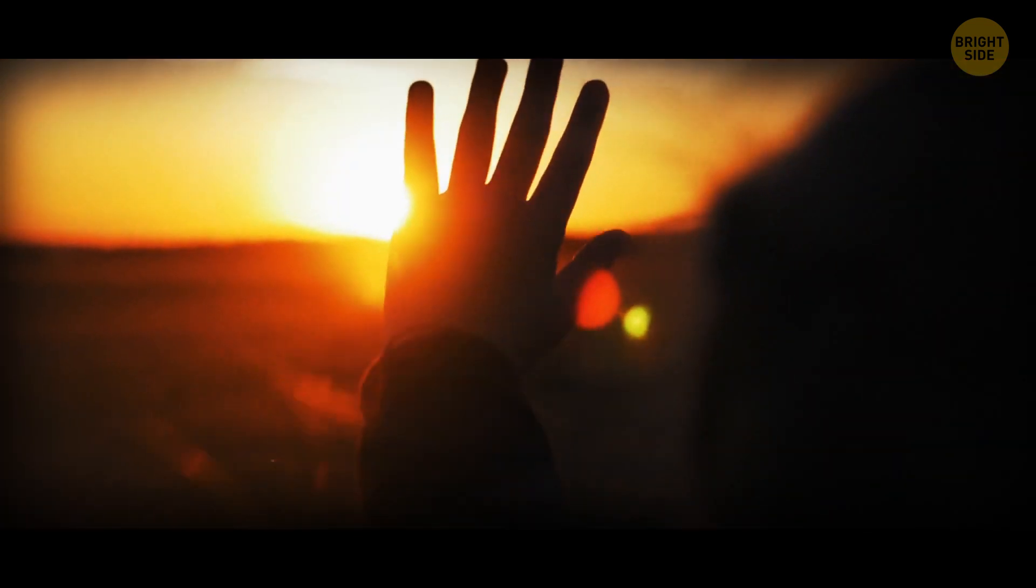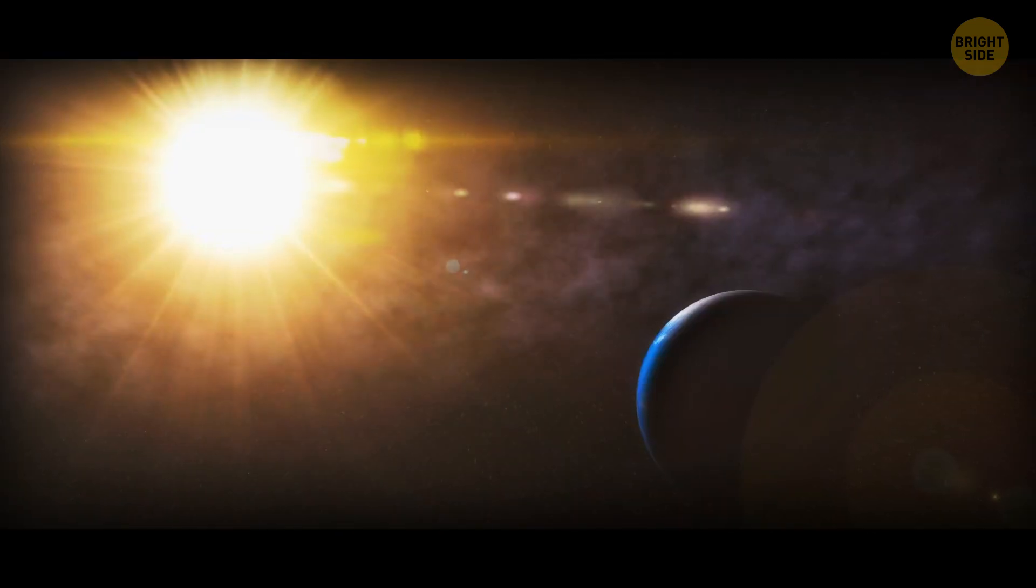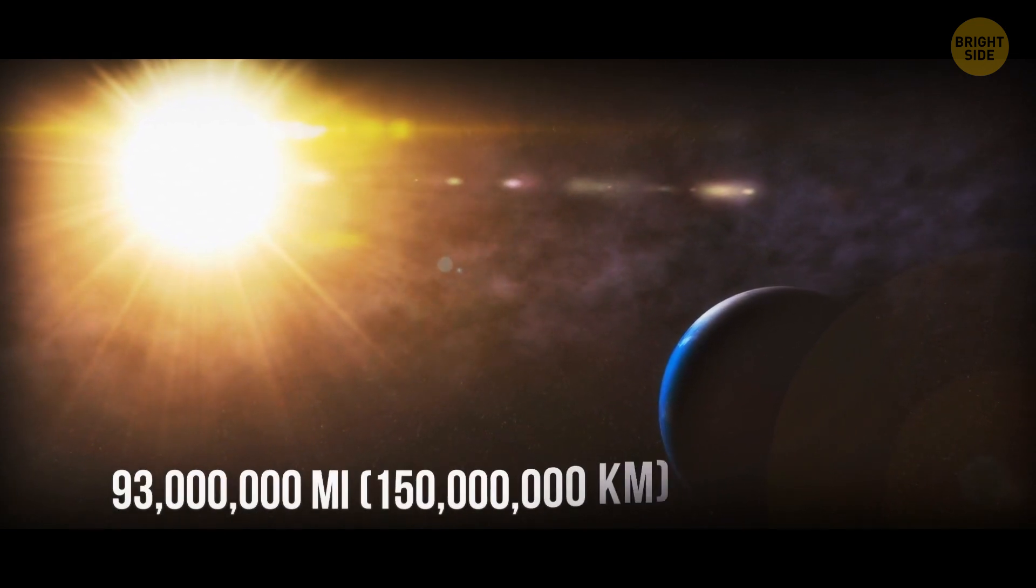The solar light and heat are enough to light up our days on Earth as well as support life here, even though the sun is around 93 million miles away from us.